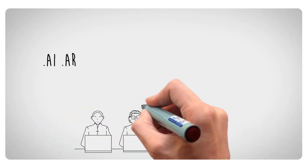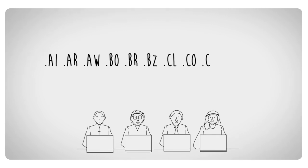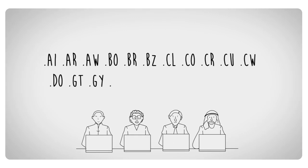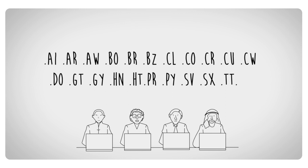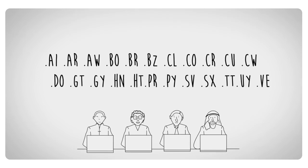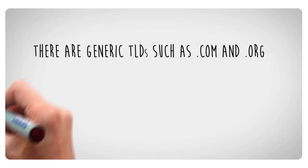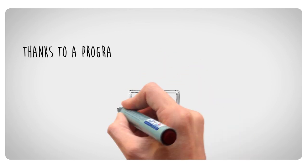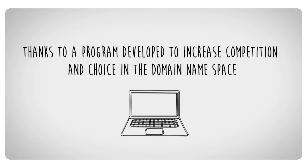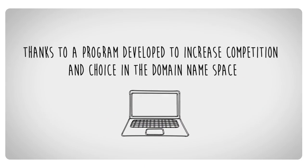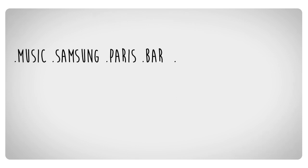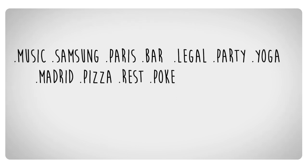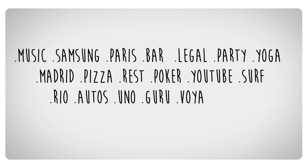There are different kinds of top-level domains, or TLDs, such as two-letter country code TLDs generally used or reserved for a country, a sovereign state, or a dependent territory. There are generic TLDs such as .com and .org, and now new generic top-level domains, thanks to a program developed to increase competition and choice in the domain name space. There were only about two dozen gTLDs before the new gTLD program — now there are hundreds of them.